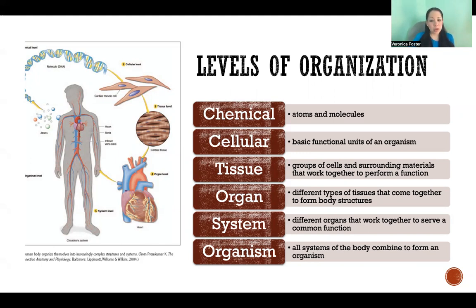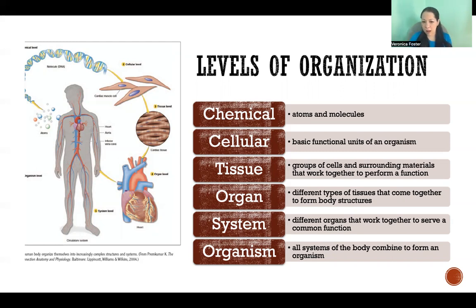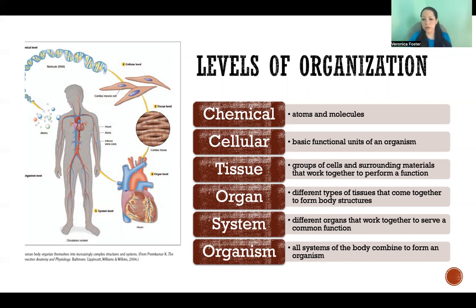Multiple organs that come together to serve a common function would be called a system or an organ system. So that's where we would have organs like the small intestine, liver, and pancreas — those are examples of organs that come together to form the digestive system. All of our systems are composed of multiple organs or collections of tissues working together to perform that function.